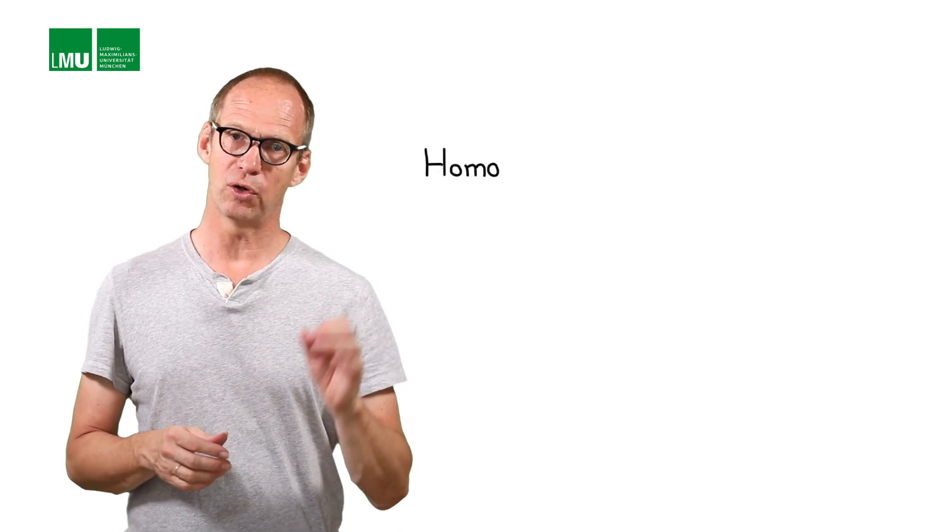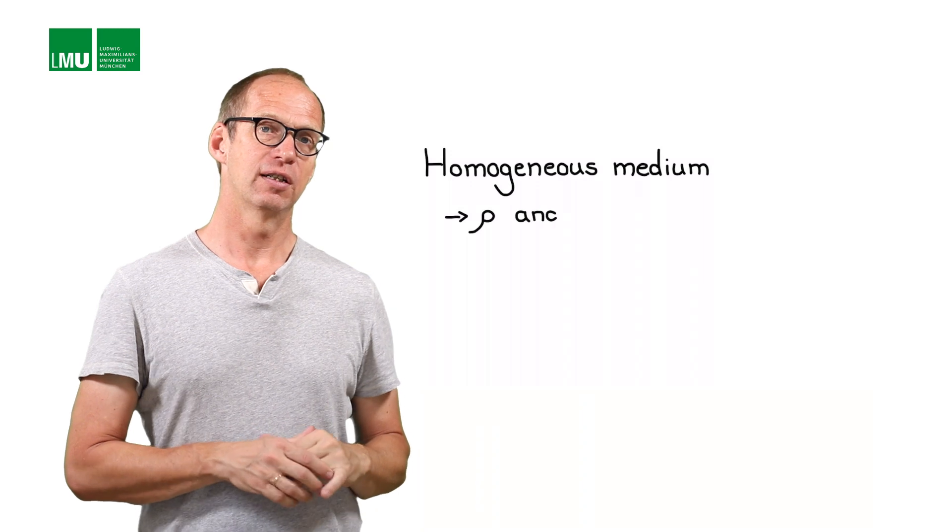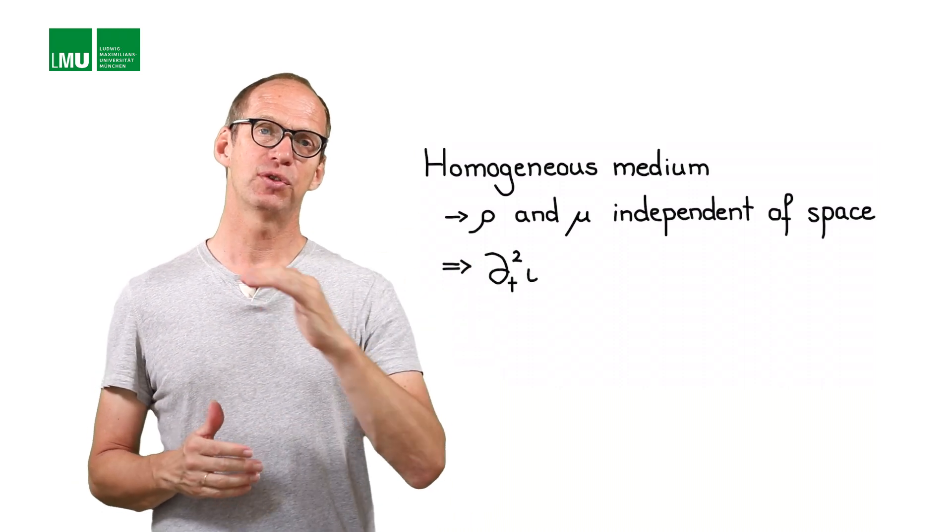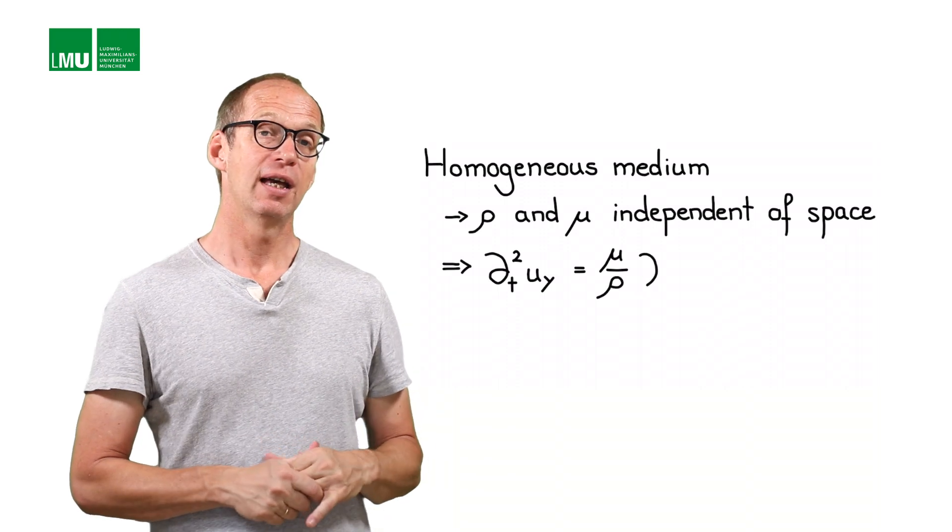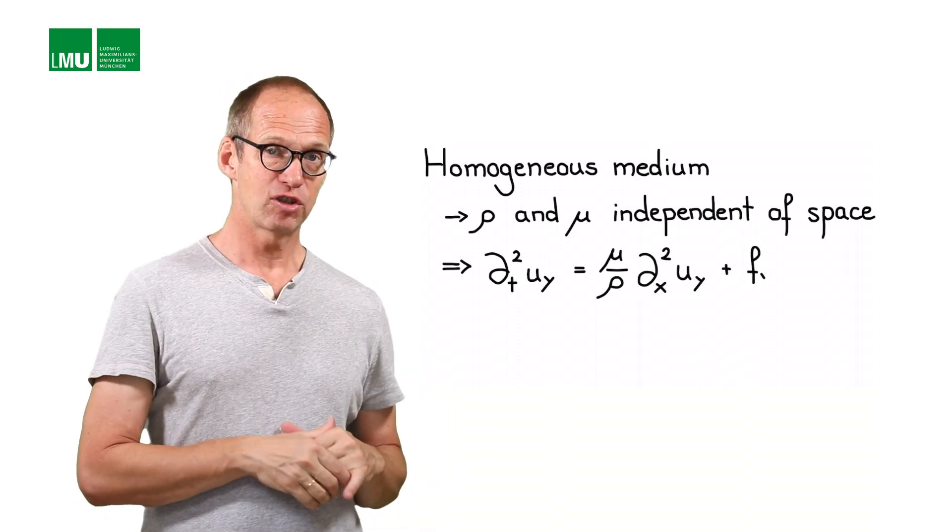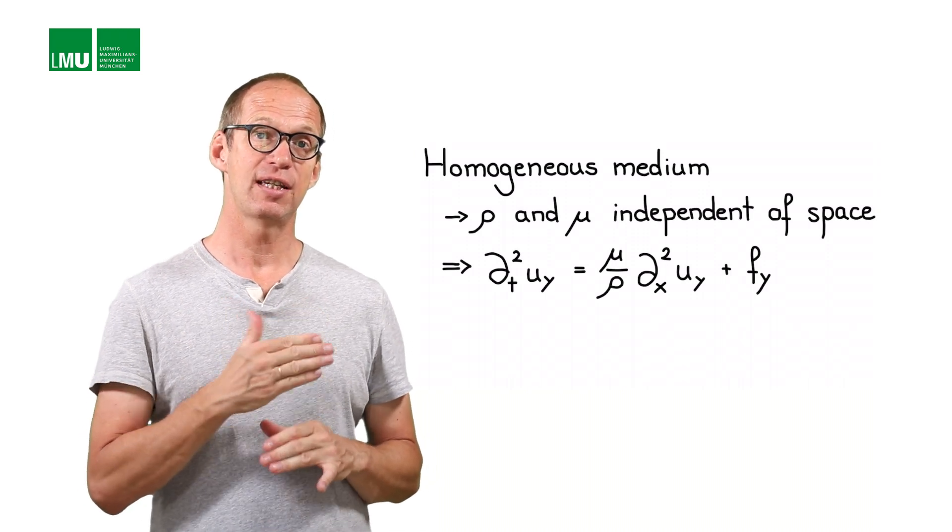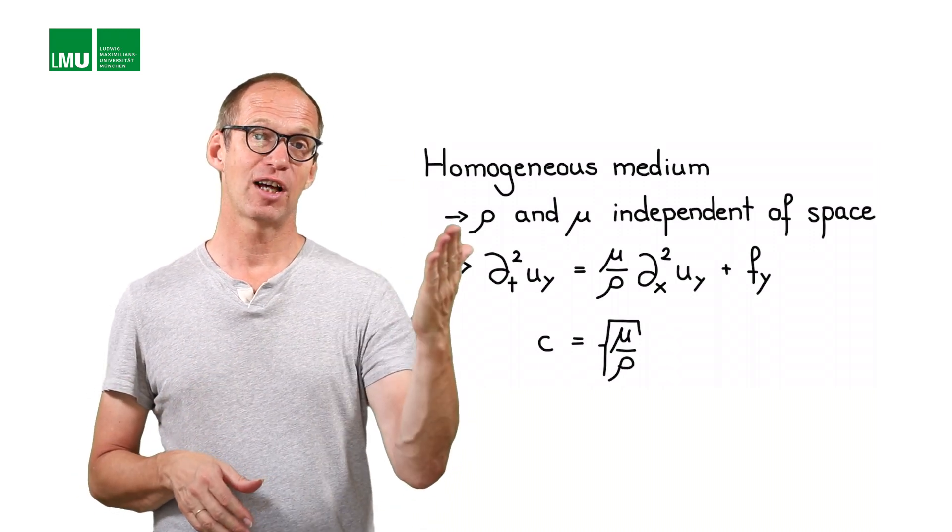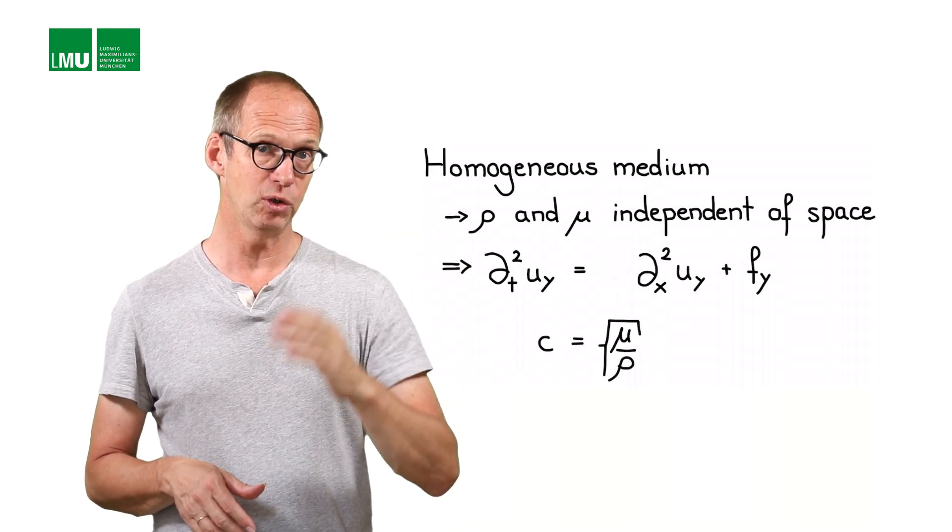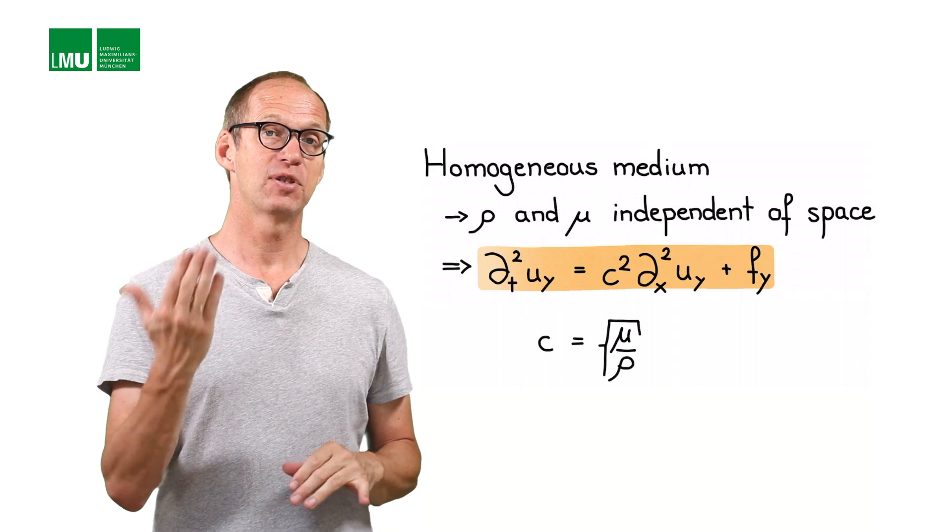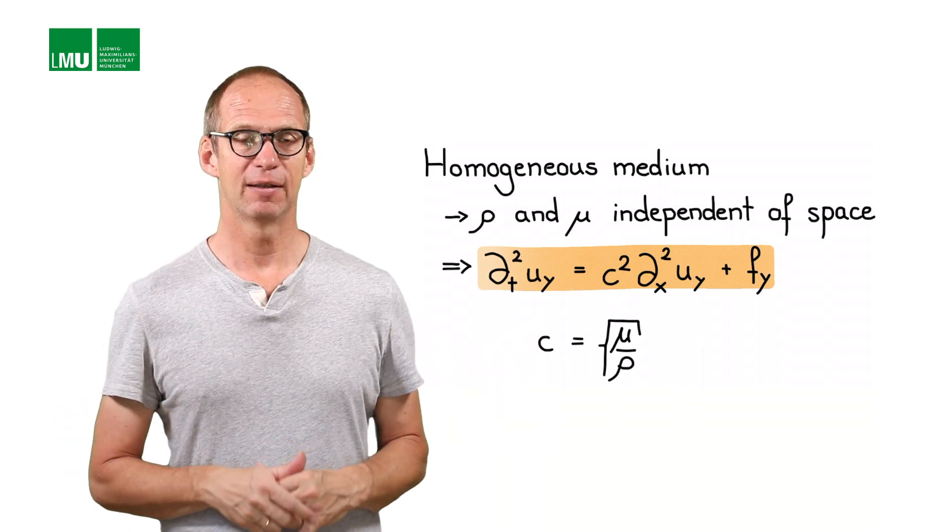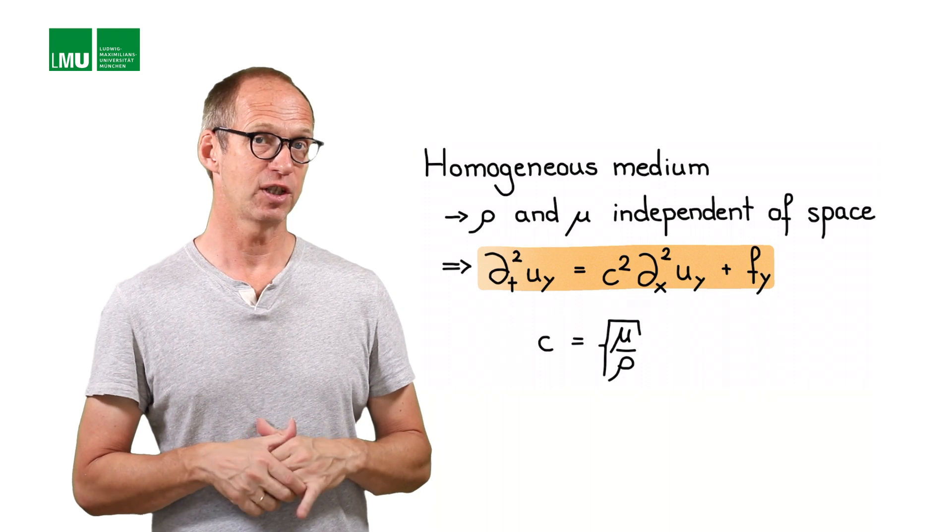Something interesting happens if you assume a homogeneous medium. So density and the shear modulus mu does not depend on space. Then you can take the mu out of the bracket. If you take rho to the other side of the equation, you get mu divided by rho. And, you might notice, the velocity, the shear velocity actually is, let's call this c, is equal to the square root of mu divided by rho. So, you end up with an equation, second time derivative with respect to time of u is equal to c squared times second time derivative of u plus a source term. And you see, mathematically, that's actually identical to the wave equation that we had for acoustic waves.